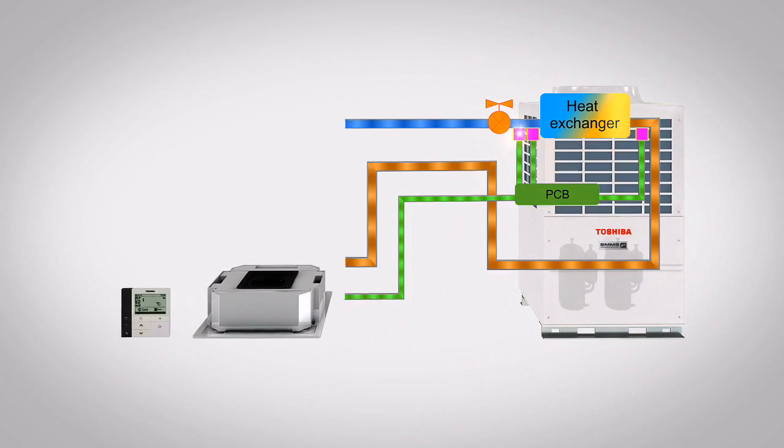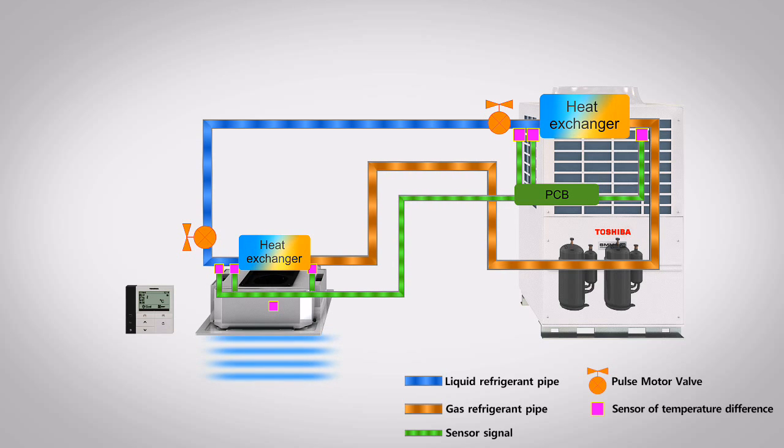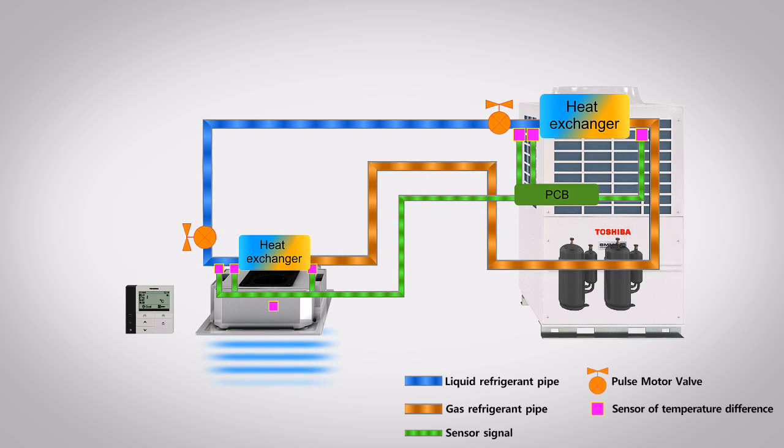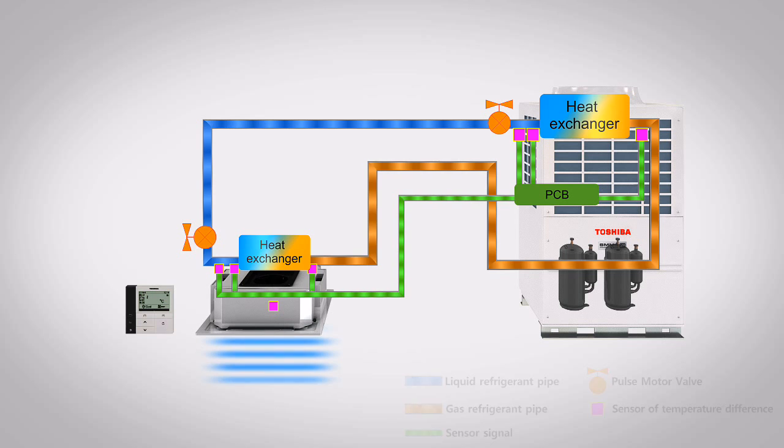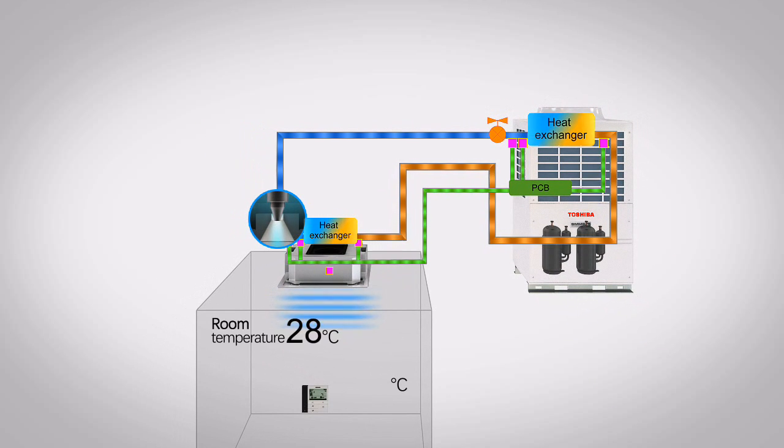The volume of refrigerant that passes through each indoor unit can be controlled precisely according to the differences between the set temperature and the room temperature. In addition, the control can actively adjust the flow of refrigerant through each indoor unit in response to operational load changes on the total system.